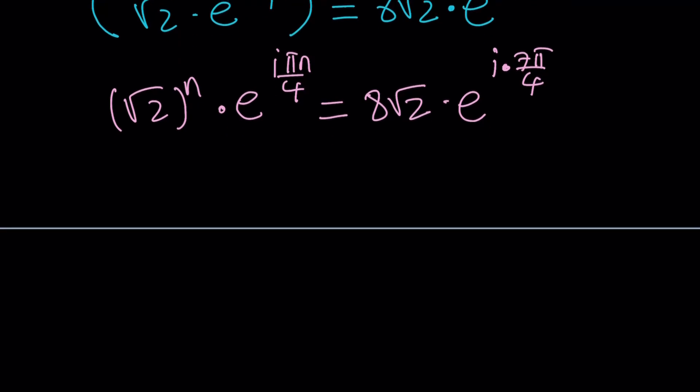So kind of like this: (√2)^n · e^(iπn/4) divided by 8√2 · e^(i7π/4), and then this is equal to 1.